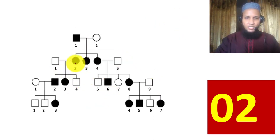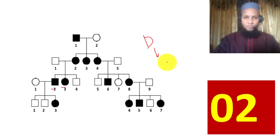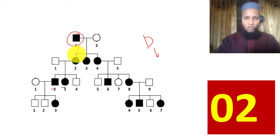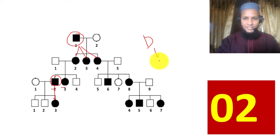Example 2: There is no skipping of generation, so it is dominant. Both male and female are affected, which might suggest autosomal, but we see a particular crisscross pattern — the affected father has transmitted the disease to all of his daughters. This father also transmitted to his only daughter. There is crisscross transmission, which is a feature of X-linked disease. Therefore this is X-linked dominant.